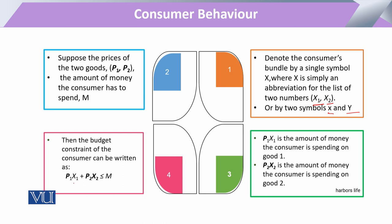अब अगर consumer एक bundle purchase कर रहा है जो x1 x2 है, उनके relevant prices के तहत, तो अब ये जो हमारे पास setup आ रहा है — इस side पर हम देखें, so it is his expenditure. और दूसरी तरफ जो M है, ये है उसकी income, या उसके resources, या उसका budget। अब इन दोनों के दर्मियान equality की form हो सकती है, क्योंकि जितनी expenditures हैं वो income के equal हो सकते हैं, या उससे less than हो सकते हैं। उससे exceed तभी हो सकते हैं अगर consumer कहीं से अपने कुछ resources borrow कर रहा हो, या उसको कहीं कुछ उम्मीद हो, और उसकी base पे वो उसको utilize कर रहा हो।